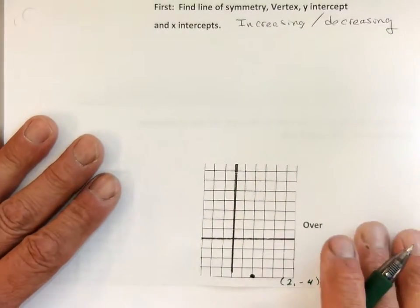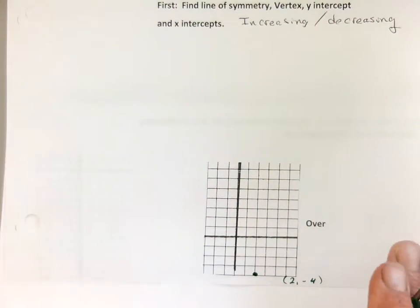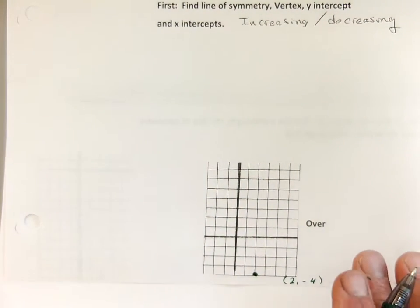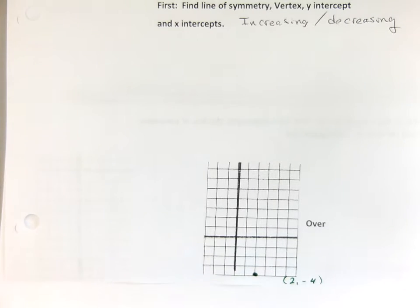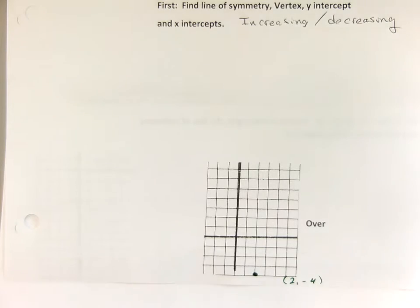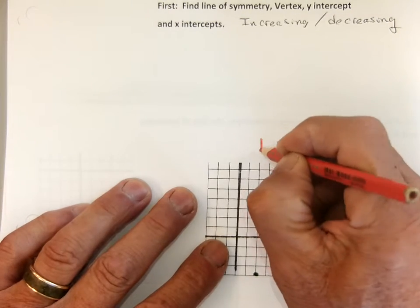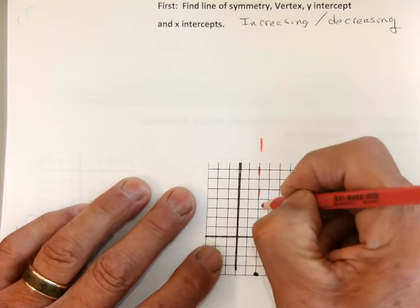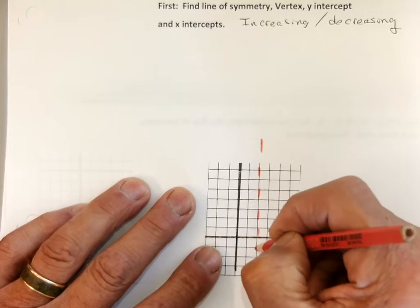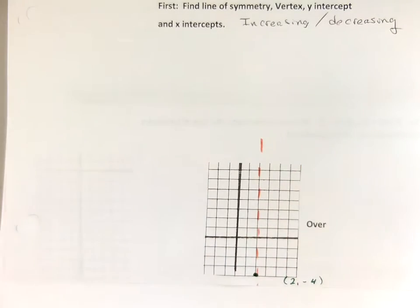Now, line of symmetry — it's like the middle, the line that goes through it. It's not part of the graph, that's why I always do it as dashed. It's the line where we can fold the points over.